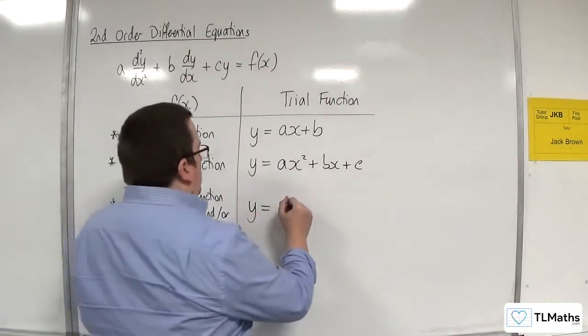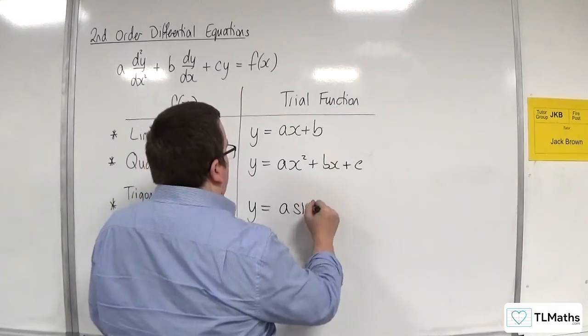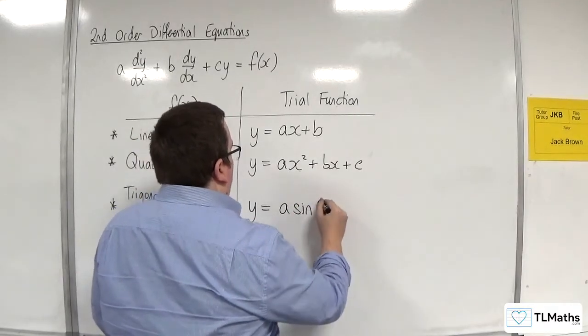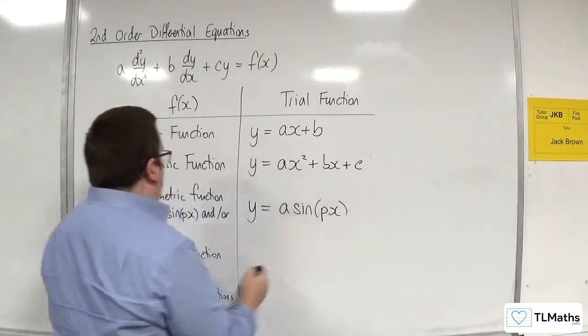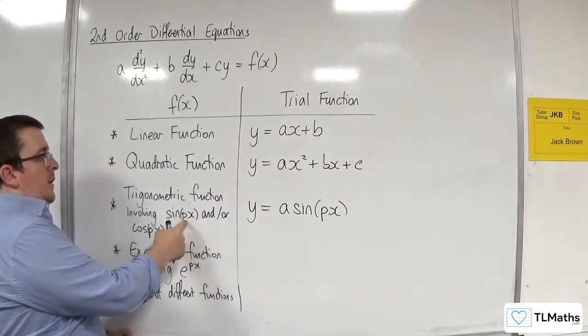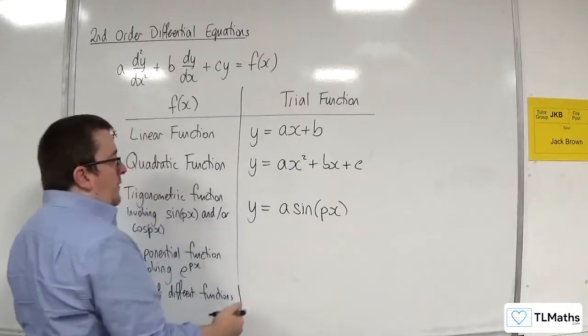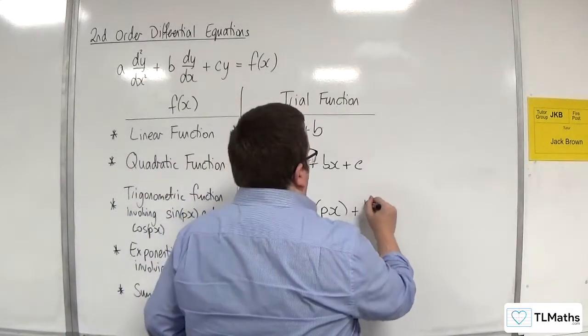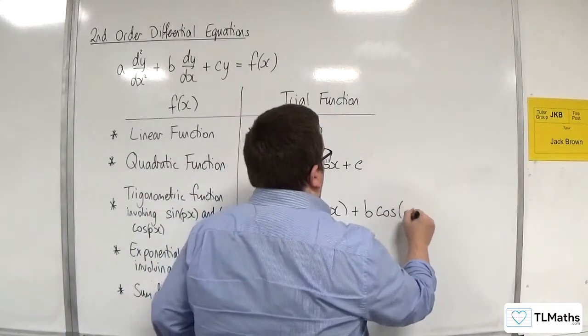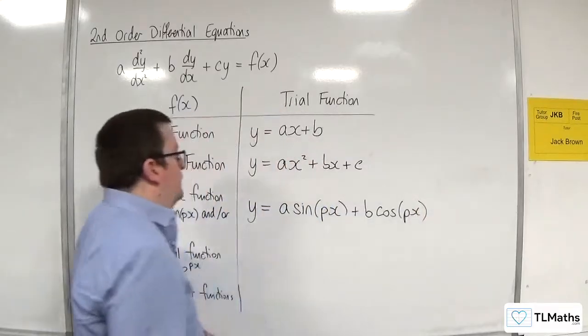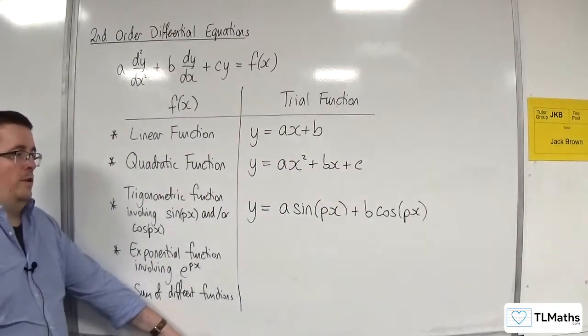So we would have y equals a sine of px. So you've got to use the same interior function that you have here, px and px, plus b cosine of px. That's your trial function.